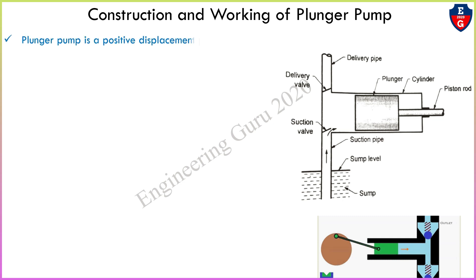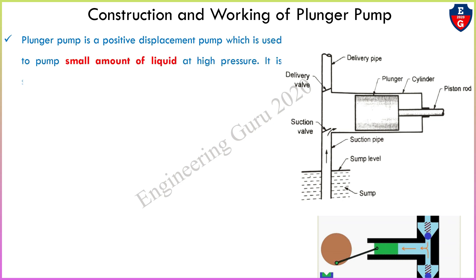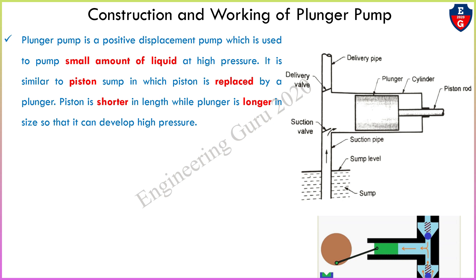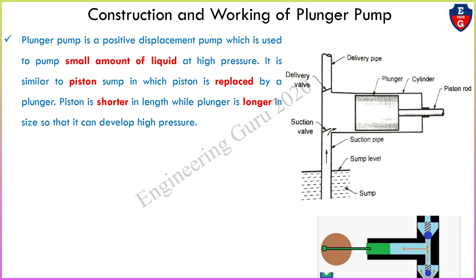Now understand the construction and working of the plunger pump. A plunger pump is a positive displacement pump which is used to pump a small amount of liquid at high pressure. It is similar to a piston pump in which the piston is replaced by a plunger. The piston is shorter in length while the plunger is longer in size, so that it can develop high pressure.